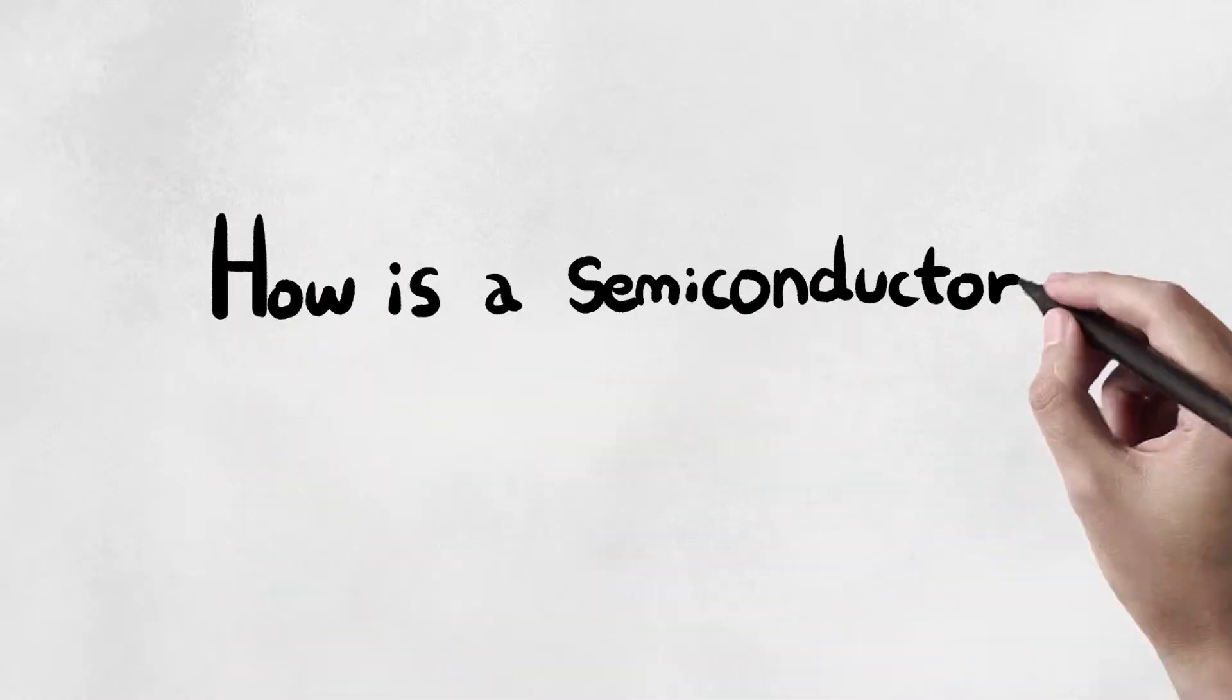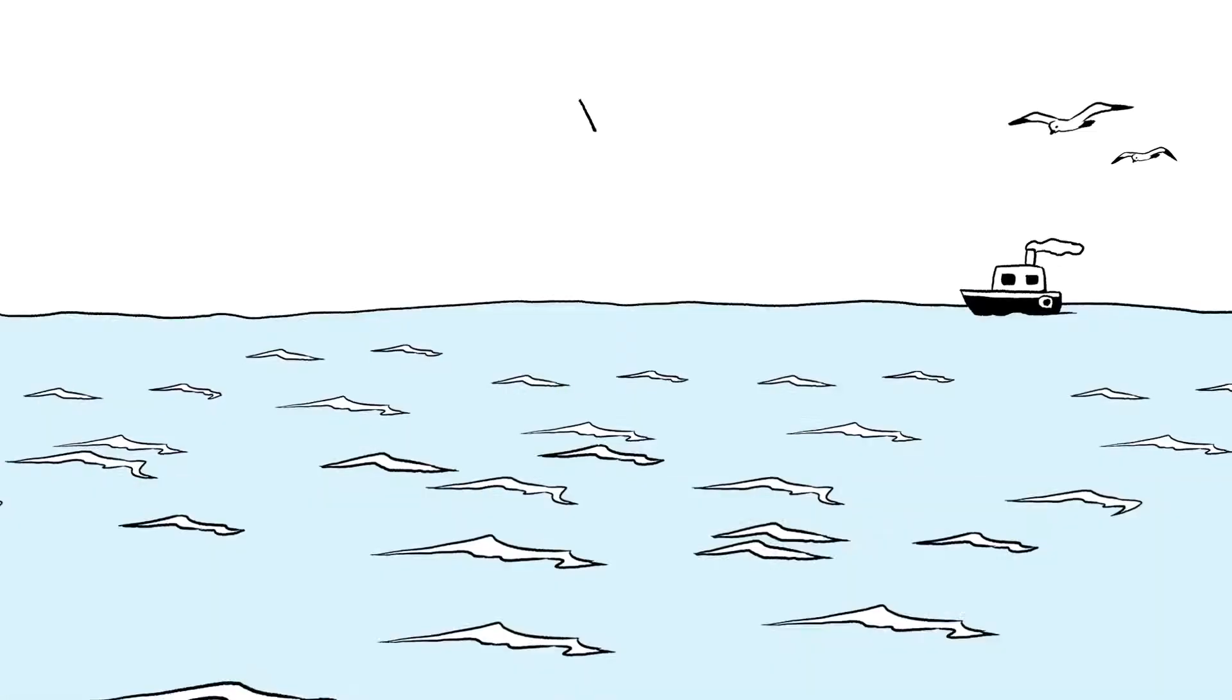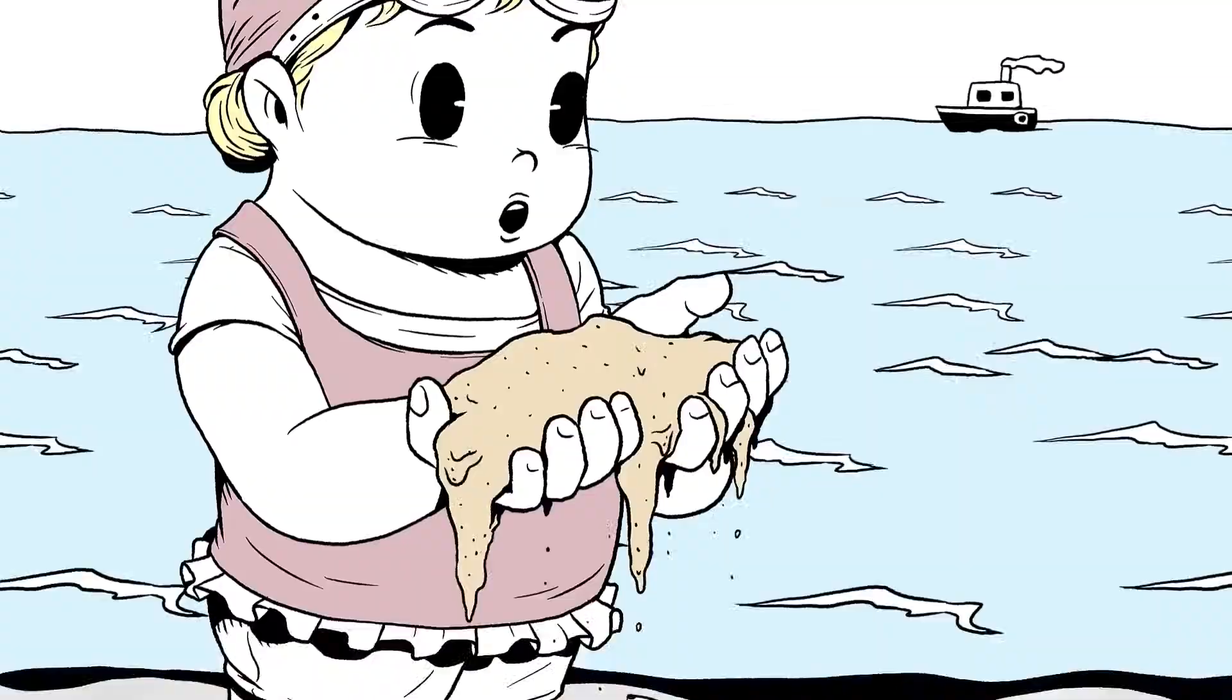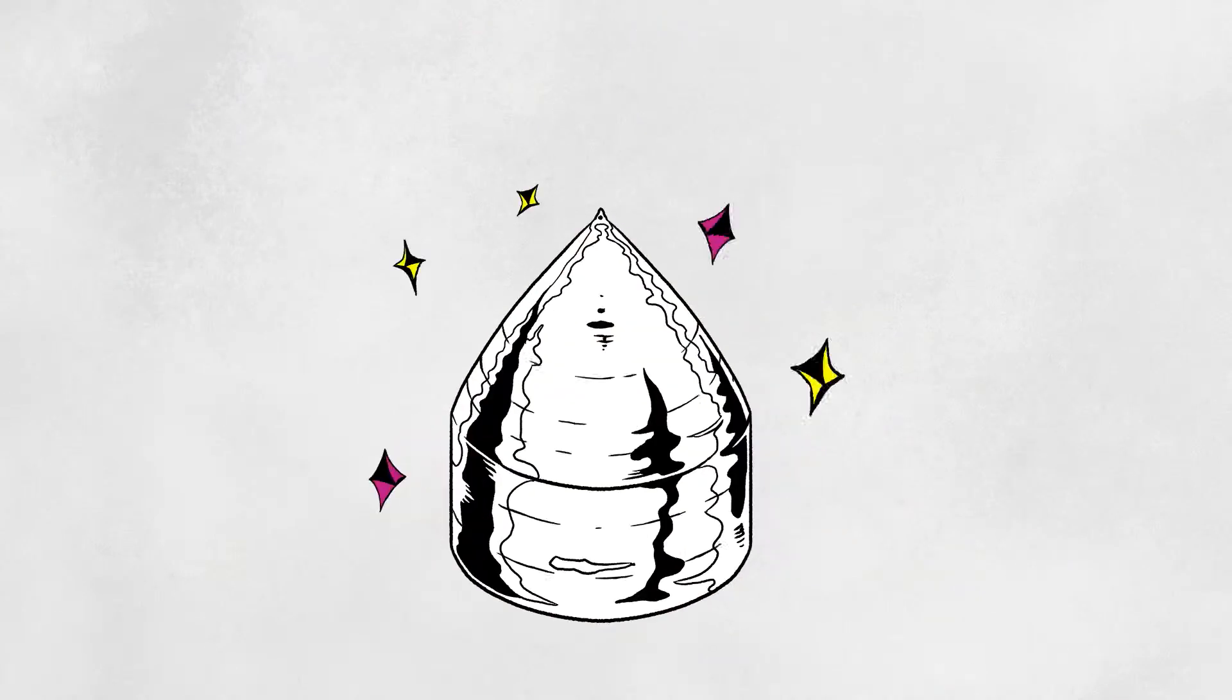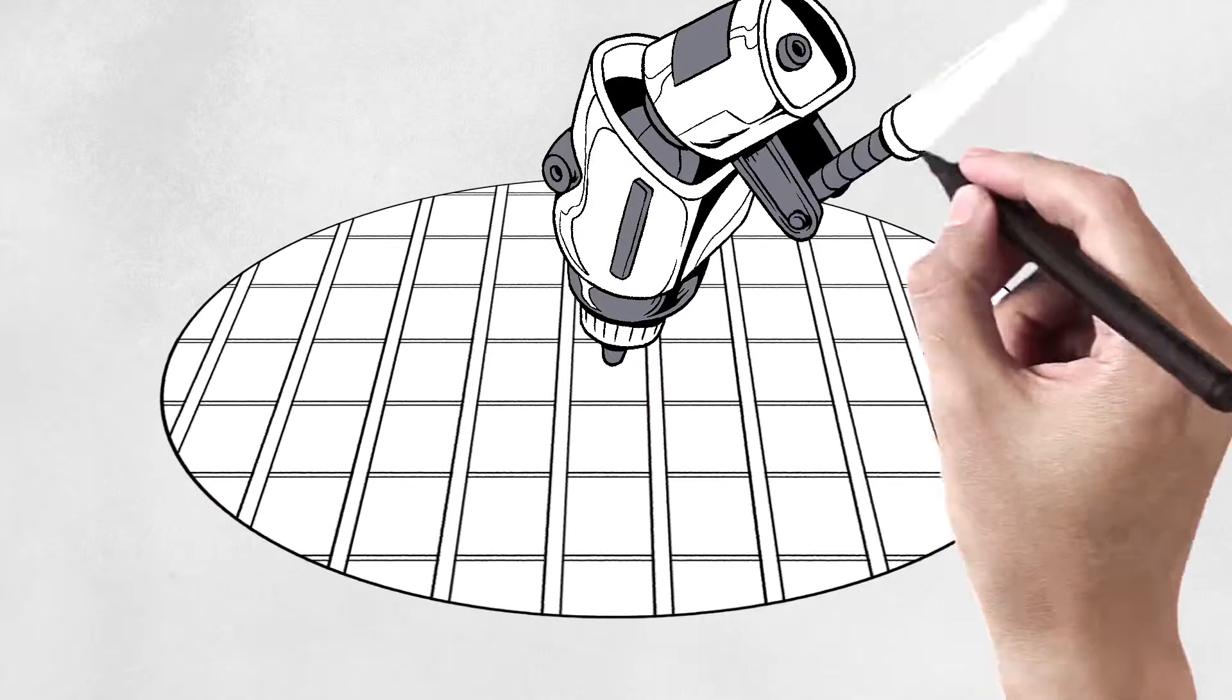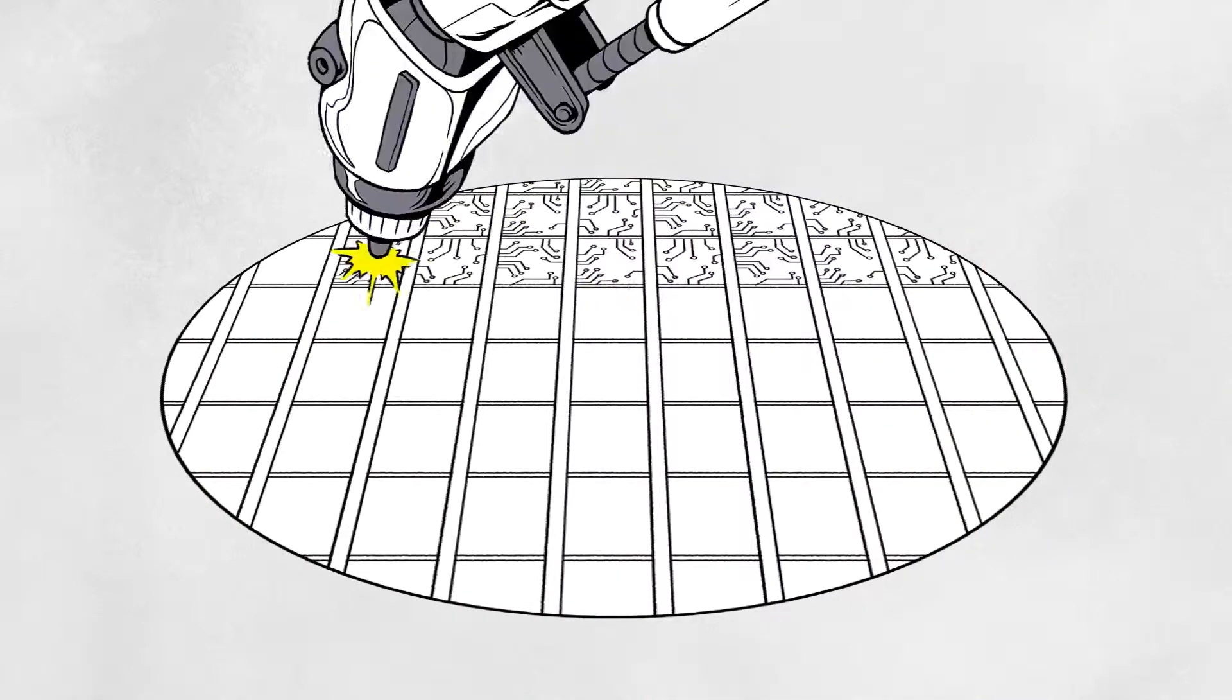Then, how is a semiconductor created? The starting point is an element called silicon, which can easily be found in sand. We use silicon to make thin, round wafers and then build tiny, intricate circuits on it over the course of hundreds of processes.